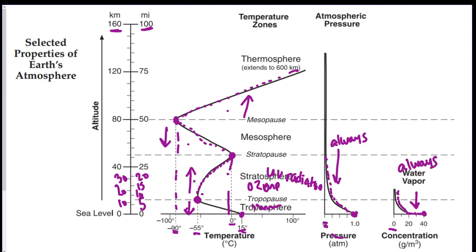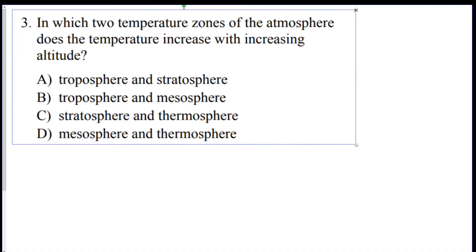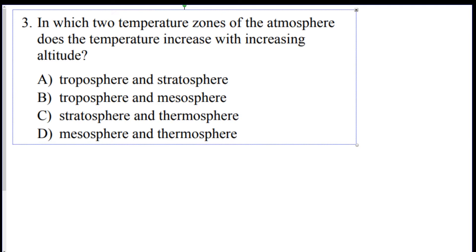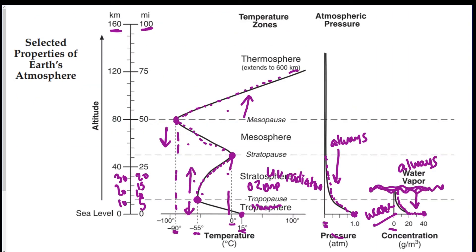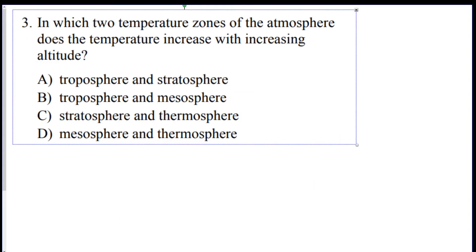Pressure always goes down as you go up, and water vapor always goes down as you go up. There is no water vapor above the troposphere — most water vapor is in the troposphere, which is why we have all our weather down here. So which two temperature zones increase with altitude? The stratosphere and the thermosphere — answer C.